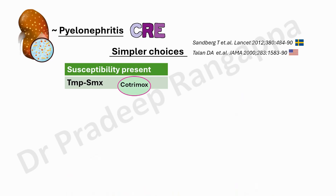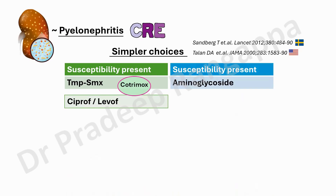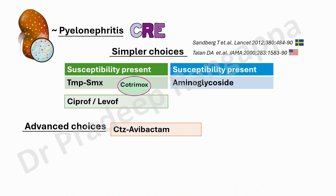Colistin is not recommended for pyelonephritis — I'm sure many intensivists would not be using it for this, and there is no recommendation for it. Trimethoprim-sulfamethoxazole or co-trimoxazole can be considered even for hydronephrosis with pyelonephritis where there is susceptibility. Ciprofloxacin and levofloxacin could also be used. If there is susceptibility to aminoglycosides, therapeutic drug monitoring is recommended to optimize doses, especially as these patients often have AKI. When using ciprofloxacin and levofloxacin, be aware they can lower the seizure threshold.